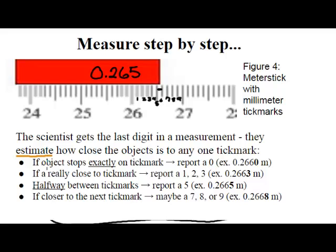Here's a couple rules of thumb. If the object is exactly on the tick mark you reported last, I would put a 0 in this last spot. If it's really close to that tick mark, maybe a 1 or a 2 or a 3. If it's exactly halfway between, you might put a 5 in this spot.